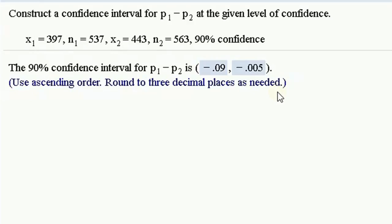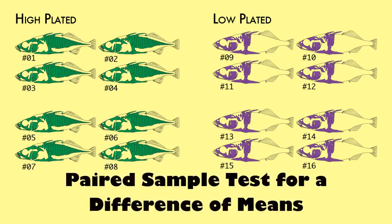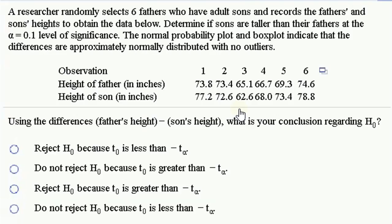So if we were going to interpret this, we would say we can say with 90% confidence that the interval is from negative 0.09 to negative 0.005. So that means we can say with 90% confidence that P1 is less than P2. If the confidence interval straddled zero, we couldn't say that with 90% confidence. We couldn't rule out the possibility of the two proportions being equal, or even P1 being greater than P2.